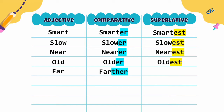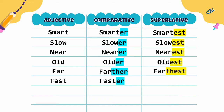Far — jauh, further — lebih jauh, farthest — paling jauh. Fast — cepat, faster — lebih cepat, fastest — paling cepat.